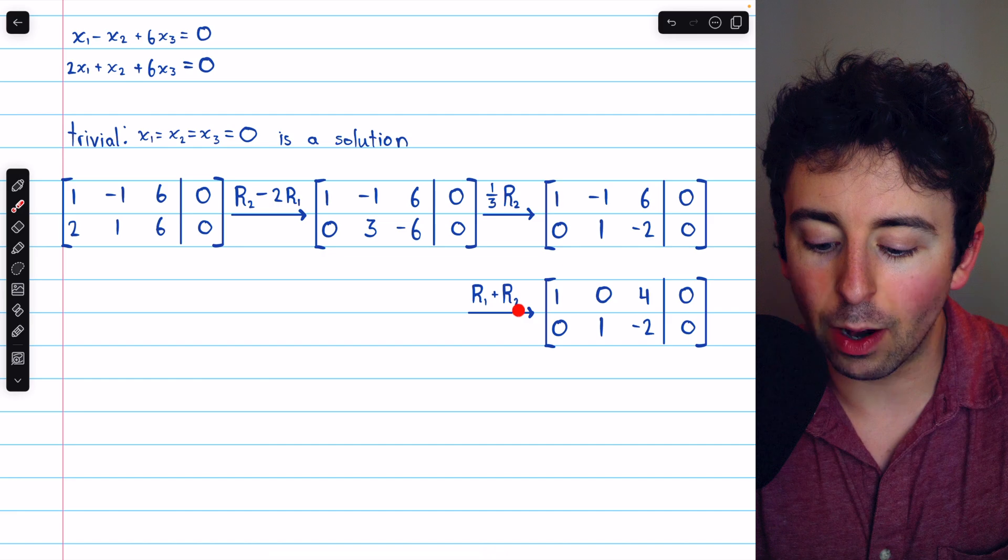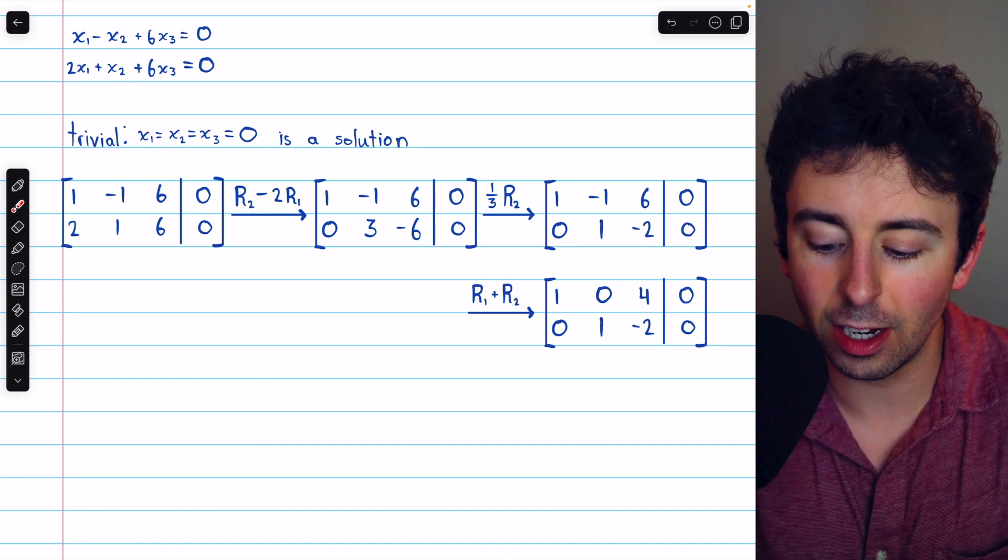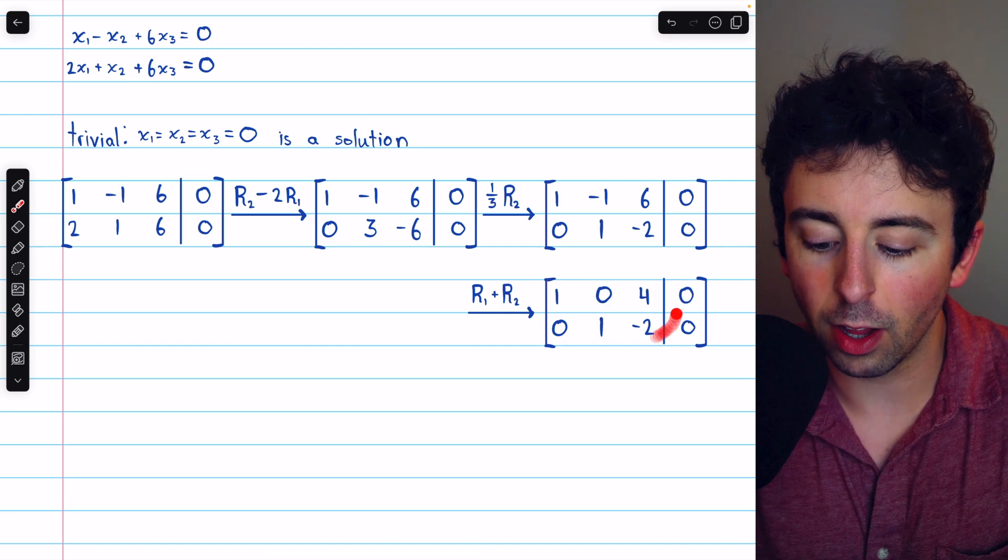Then we just want to eliminate this entry above that leading one to get it in reduced row echelon form. To do that, we add row two to row one. So that negative one is now a zero.